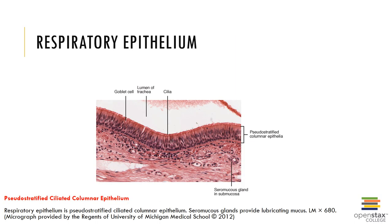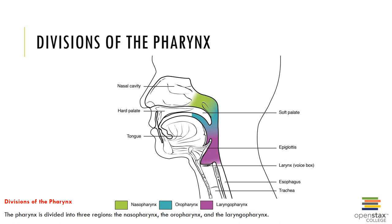Here we can see the respiratory epithelium, which is composed of pseudostratified ciliated columnar epithelium. Here you can also see the divisions of the pharynx: the nasopharynx, oropharynx, and laryngopharynx.